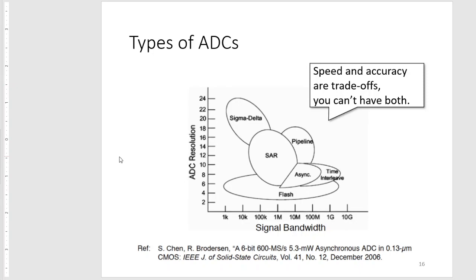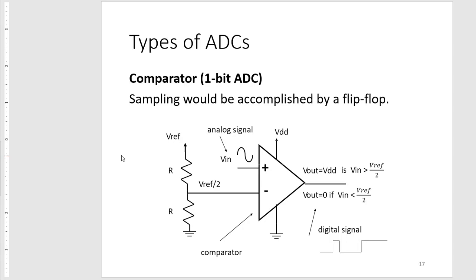For actual ADC implementations, first we have a comparator, which is used for the digital inputs for the PIC32. A comparator basically compares an input signal with a reference voltage, usually half of our VREF. Whenever VIN is greater than VREF over two, it will output VDD or digital high, and zero otherwise. This is the quantization part of the ADC. Sampling is accomplished by a clock flip-flop.